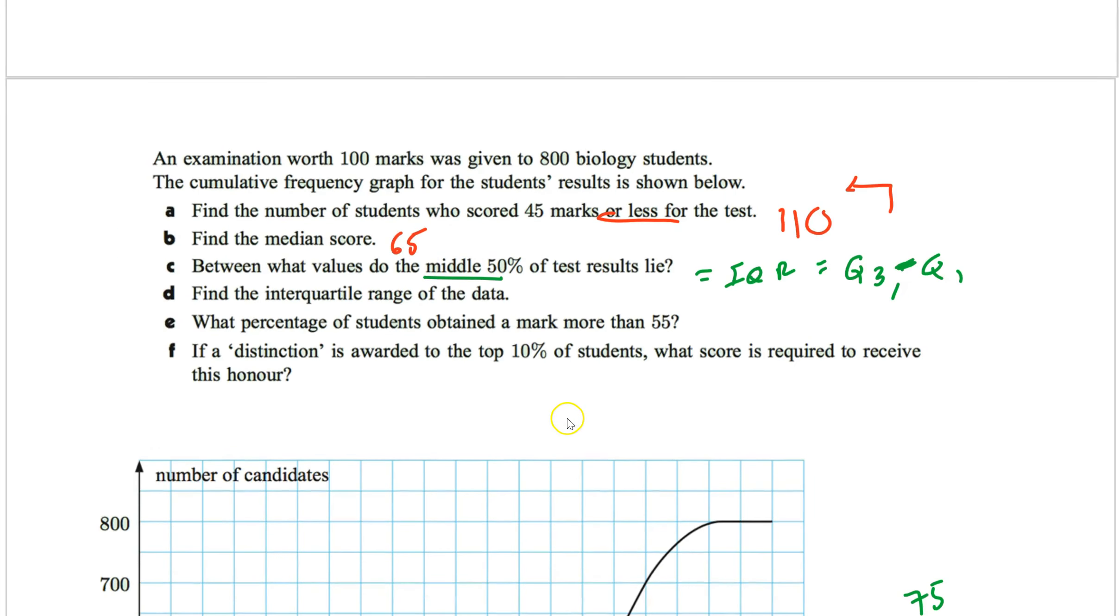So right here it says between what two values. About 75 and 54. Now they want find the interquartile range. So now you just subtract those two. 75 minus 54.